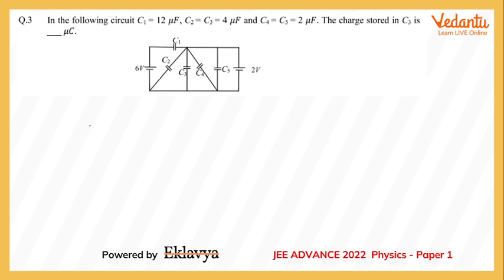Hi students, we are discussing question number three of paper one of physics of JEE Advanced 2022. This is one of the easiest questions that have come in the paper. They are seeking charge on C3.